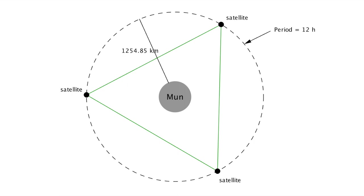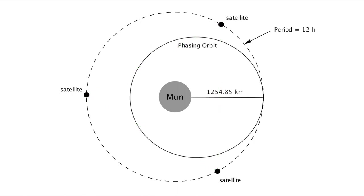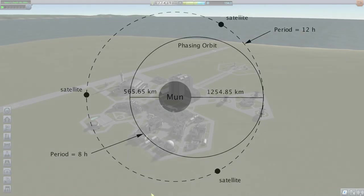The plan is to drop all three satellites from a single transfer vehicle. For this, we need a phasing orbit with an apoapsis of 1,254.85 kilometers and a periapsis that gives us a period of exactly two-thirds of 12 hours, which is eight hours. The periapsis that gives us this period is 565.65 kilometers. Check out the Let's Do the Math video to learn how to do this yourself. Each satellite will be dropped at apoapsis and then circularized into its final orbit. This final circularization requires only 36 meters per second of delta-V, which means we can build these satellites small.